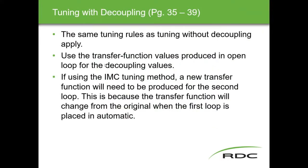Tuning with decoupling basically follows the same tuning rules as without decoupling, except you're using the transfer function values produced in open loop to calculate the decoupling values. One note: if using the IMC tuning method — which we haven't covered yet — a new step test needs to be produced for the second loop. These are specific characteristics for tuning multi-variable loops.